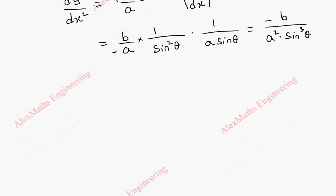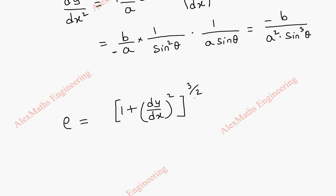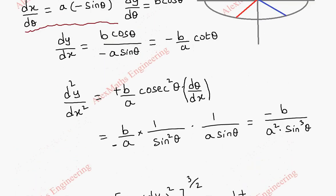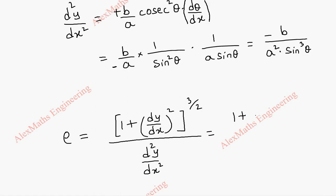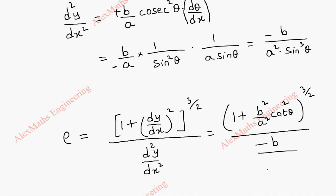Now we take the radius of curvature formula: rho equals (1 plus (dy by dx) squared) to the power 3 by 2, divided by d squared y by dx squared. Substituting dy by dx as minus b by a cot theta, we get (1 plus b squared by a squared cot squared theta) to the power 3 by 2, divided by minus b by a squared times sin cubed theta. Since it is negative we take its modulus.